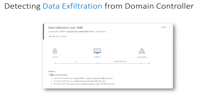For most attackers, one of their top priorities is to gain access to an Active Directory domain controller to access and steal sensitive data. Azure ATP triggers an alert when suspicious transfers of data are observed from the monitored domain controllers. Azure ATP looks specifically at the data leaving the domain controller, not the attacker's techniques, which adds greater visibility into what's actually occurring inside the environment.